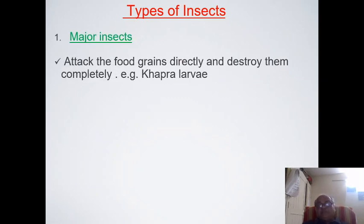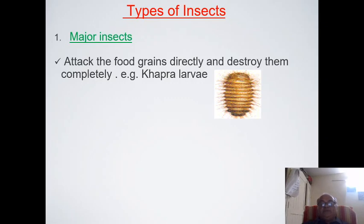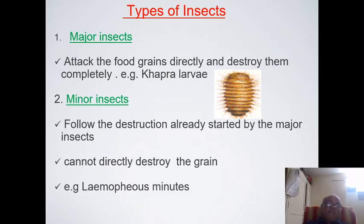Regarding types of insects that damage grain: the first category is major insects — these generally attack food grain directly and have the capability to destroy grain completely; for example, Khapra beetle larvae can start eating grain directly. The second category is minor insects — they do not have the capability to attack sound grain directly, but they can feed on grain that has already been destroyed by major insects.